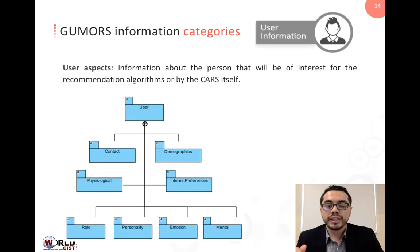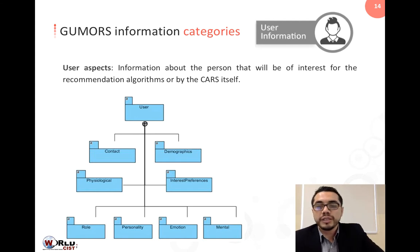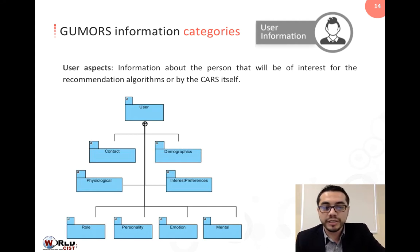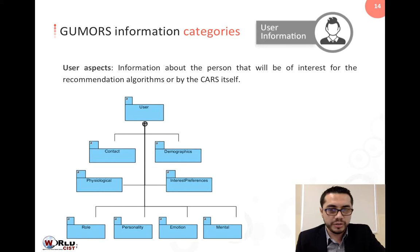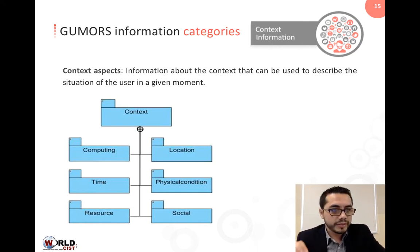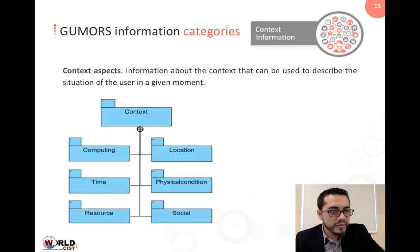User aspects describe the user as a person, considering information that will be of interest for the recommendation algorithms or the system itself. For the user, we found information related to contact, demographic information, physiological information, interest and preference, role, personality, emotion, and mental information. The next category is Context. Context aspects describe the situation or environment of the user at a given moment. Context information is subdivided into computing, location, time, physical condition, results, and social information.